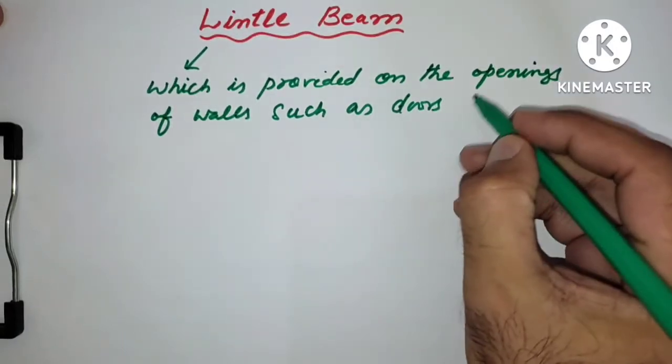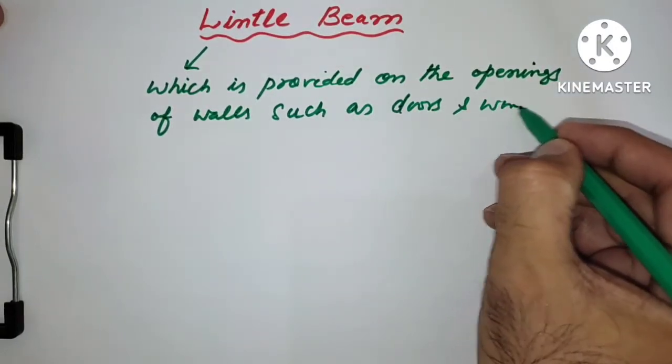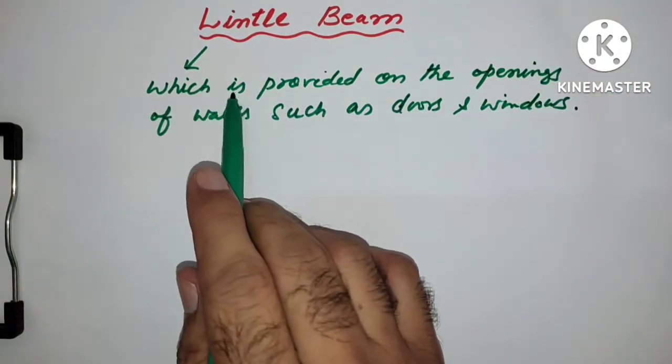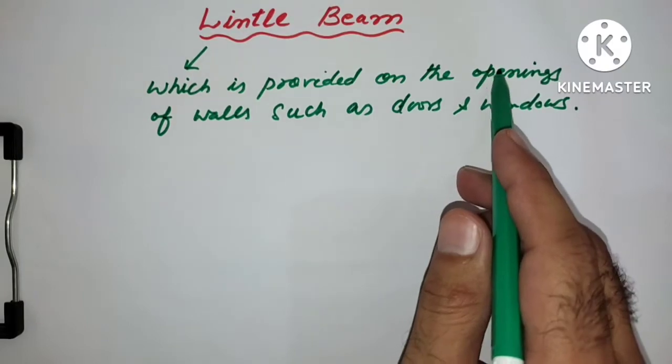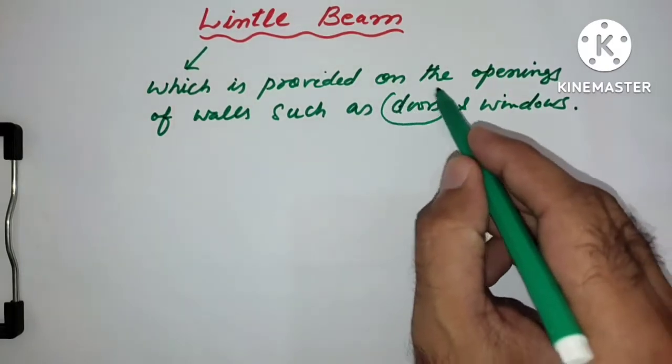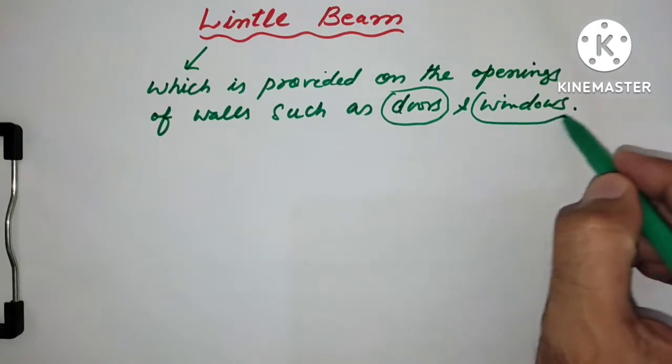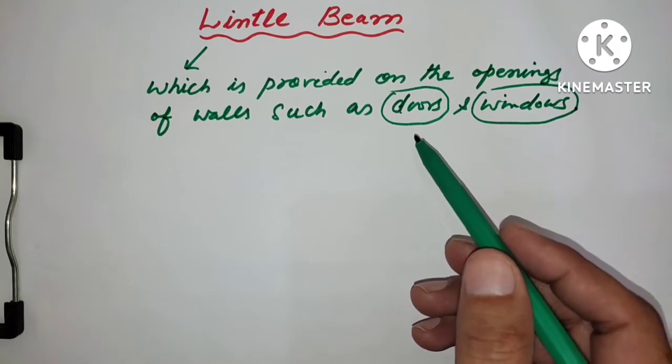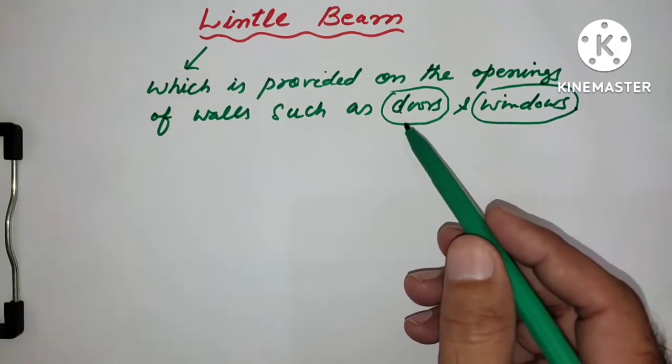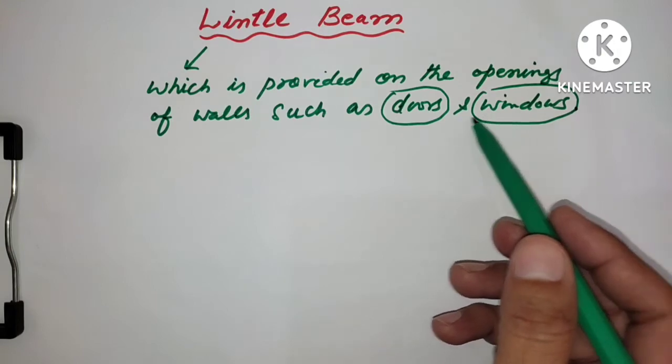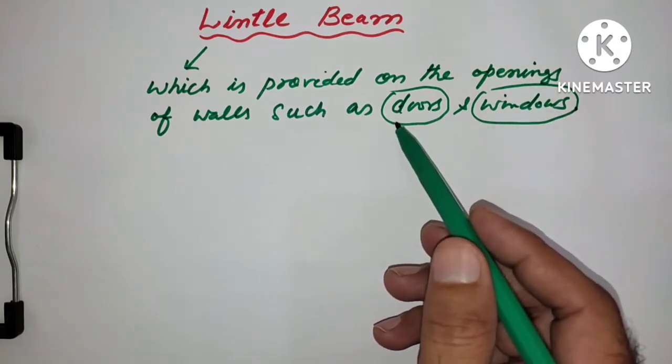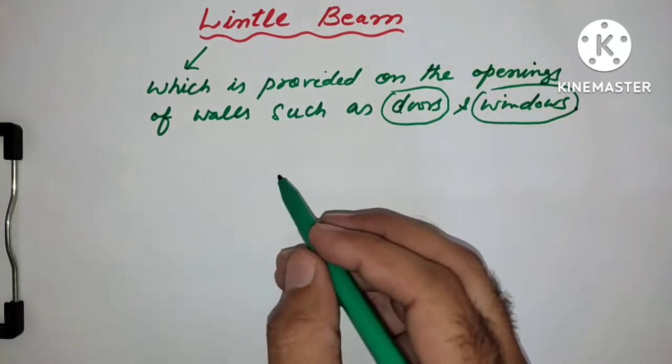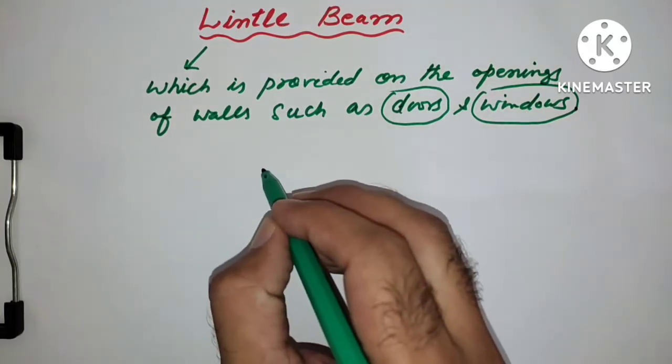as doors and windows. So this is the type of beam which is provided on the openings such as doors or windows. When we construct a building or house, we make lintels above the doors and window openings, and in such cases also above the lintels are ventilators. So I will explain in this diagram.